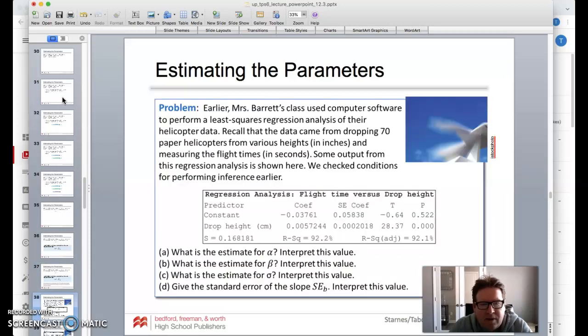Let's look at a problem. Earlier, Mrs. Baird's class used computer software to perform a least squares regression analysis of their helicopter data. The data came from dropping 70 paper helicopters from various heights and measuring the flight times. Some output from the regression analysis is shown here, and we checked conditions for performing inference earlier.